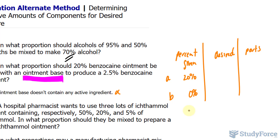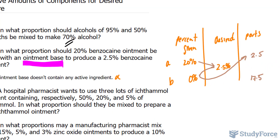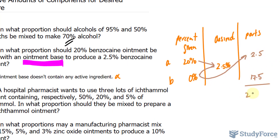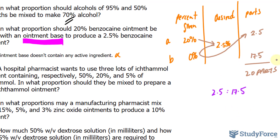The desired strength is 2.5%. To find out how many parts of B we need, subtract 20 minus 2.5, which gives 17.5 — that's how many parts of B we need. To find out how many parts of A we need, the 20% benzocaine ointment, we subtract 2.5 minus 0, and that value goes up there: 2.5 minus 0 is 2.5. Adding 2.5 and 17.5 means there are 20 parts in total. We'll write this down as a ratio: 2.5 to 17.5, and we want to reduce this down.